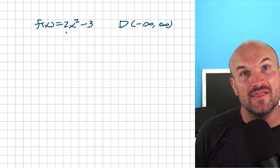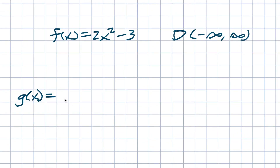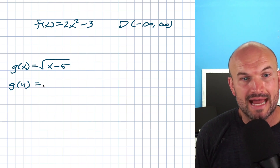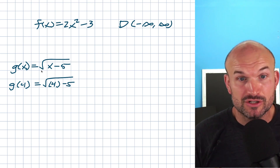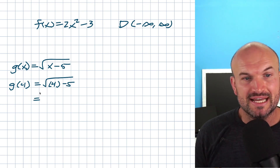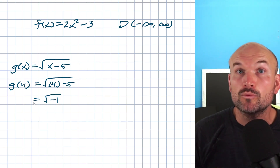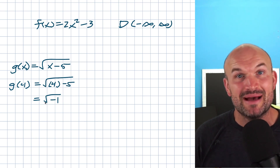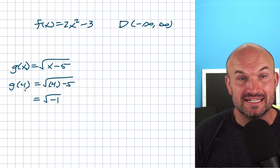However, not all functions are the same. Some functions have restrictions on their domain. Let's take a look at g(x) = √(x - 5). If I want to find g(4), look what happens when I plug in 4: I get the square root of 4 - 5, which is the square root of a negative number. A square root means a number multiplied by itself, and there's no number in our real number system that multiplies to give us a negative 1. So this function is not defined for 4.